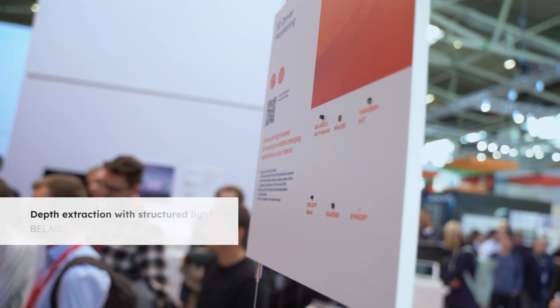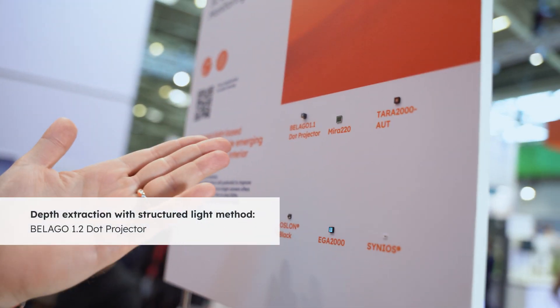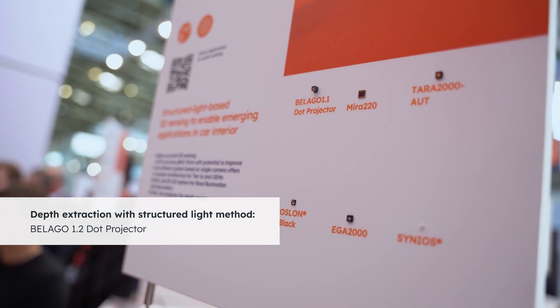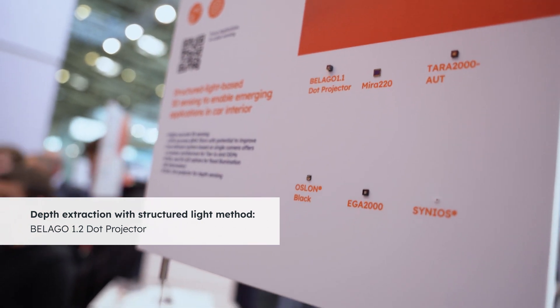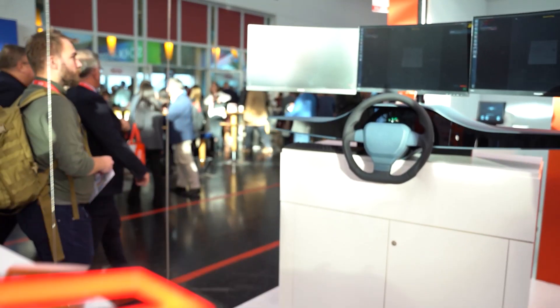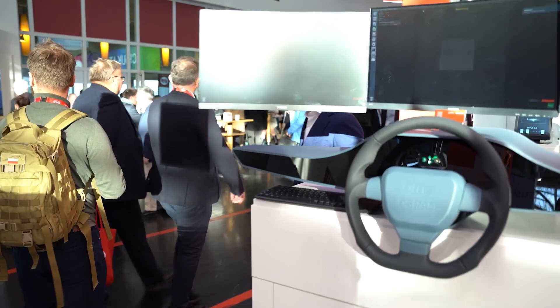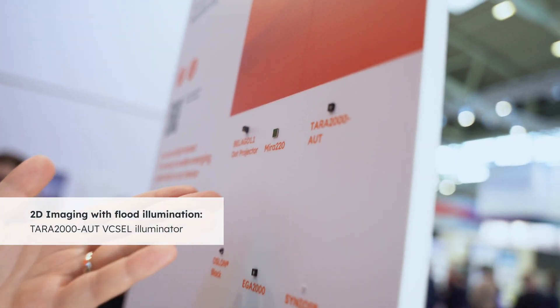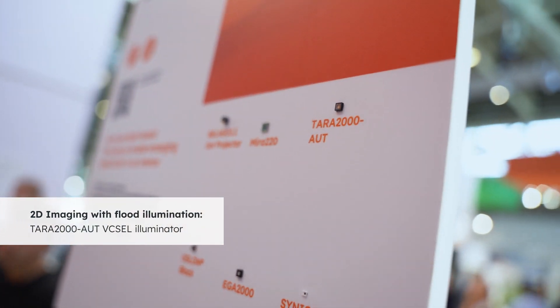Structured light uses one of our dot projectors — the Belago — which you can see here. The Belago dot projector projects dots on the face of the driver and using special software, the depth information of the driver's face is calculated. This gives you 3D data on top of the 2D data coming from our Vixel illuminator Terra 2000, which provides curtain lights to the face and generates the 2D image.